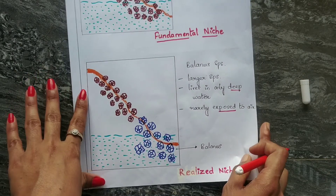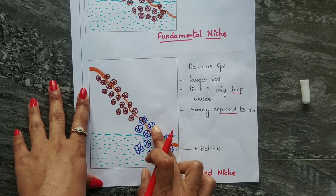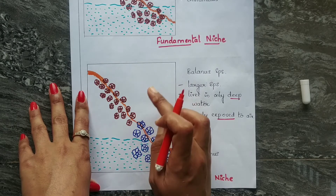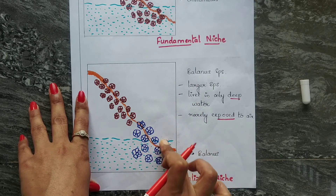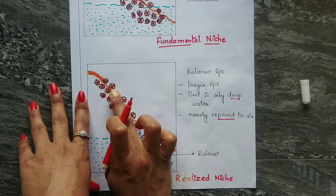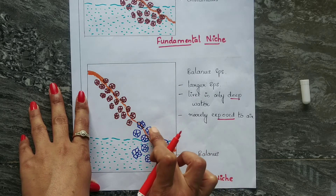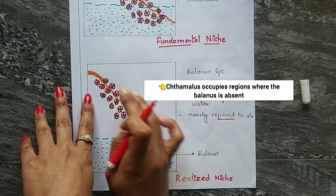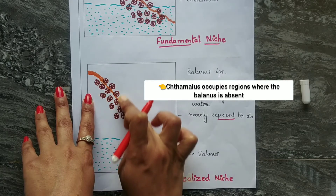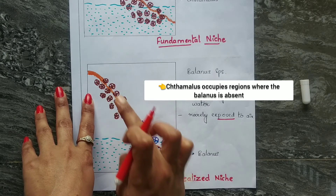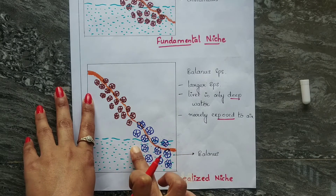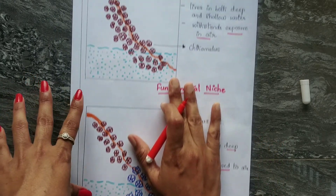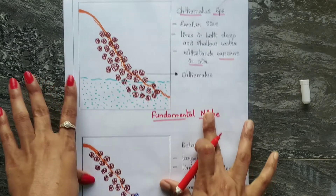When Balanus species arise, they cannot tolerate dehydration and are never exposed to air, so they live at the bottom of the shore. They then compete with Chthamalus and outcompete it from the lower zone. As a result, Chthamalus is restricted to the upper zone only. This restricted range, in the presence of competition, represents the realized niche.